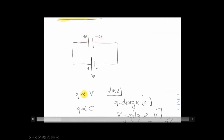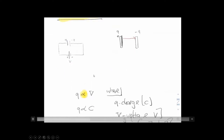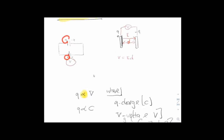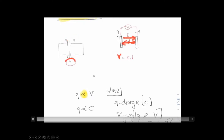You can only charge a capacitor up to the voltage supplied by the battery, because conservation of energy requires that the energy supplied by the battery equals the energy stored in the capacitor. The voltage across the capacitor equals the voltage supplied by the battery. The charges keep building up until the voltage difference across the capacitor equals the battery voltage. Charging up a capacitor takes time — it's not instantaneous. You can control how fast you charge or discharge it.